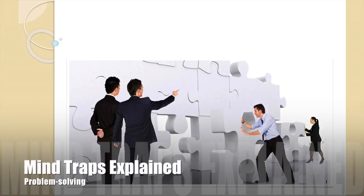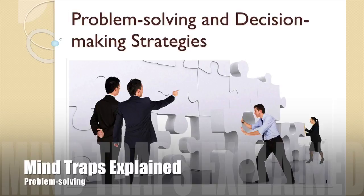The problem, says author and psychiatrist Theodore Rubin, is not that there are problems. The problem is expecting otherwise and thinking that having problems is a problem. A problem is just a question or situation that presents doubt, perplexity or difficulty. It is an issue that needs to be corrected or overcome in order to achieve a desired state.